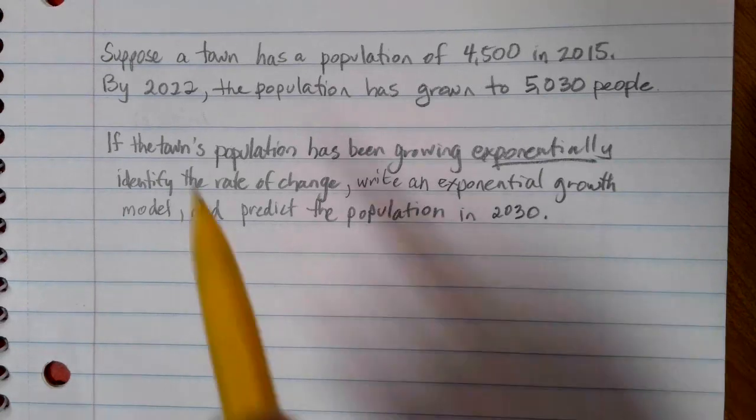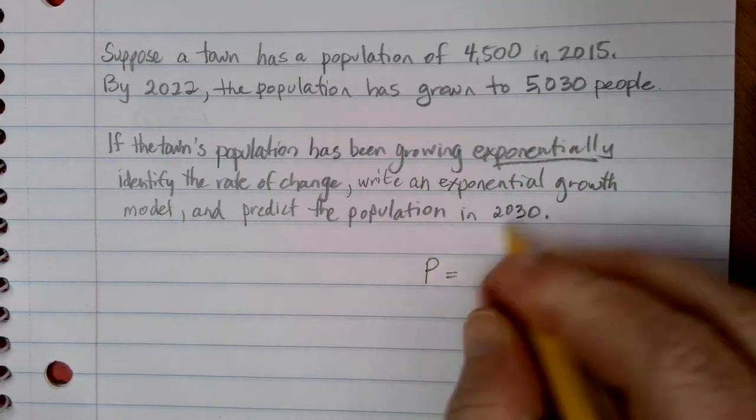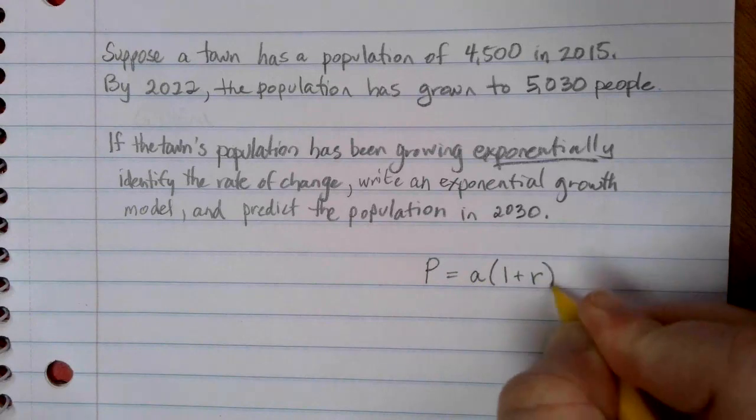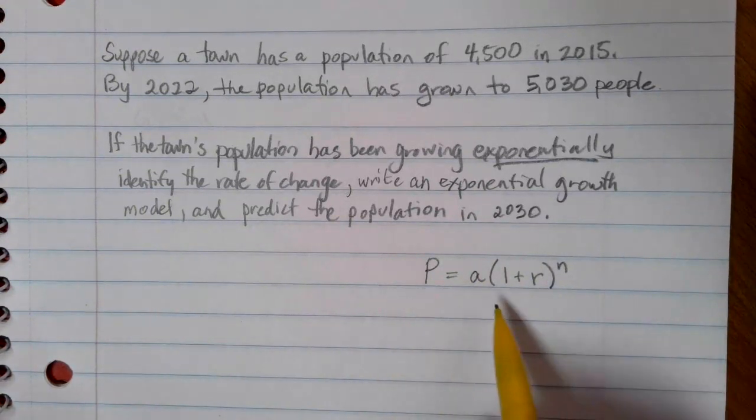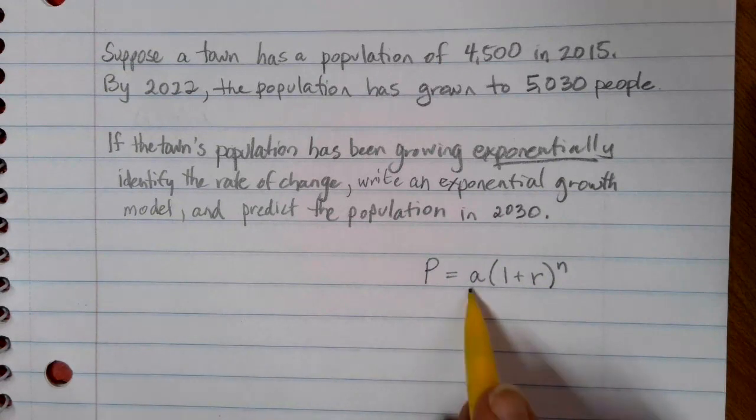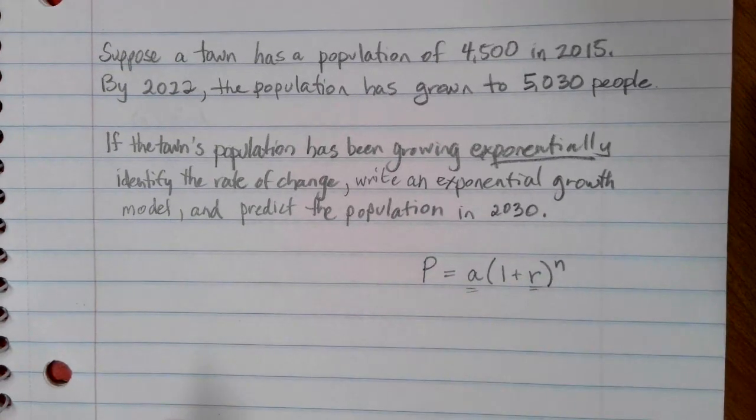In this case, I know an exponential growth model, the general form looks like this: P equals A times 1 plus R to the nth power. So what I want to try to do here is identify the A and the R that's specific so that I can write that exponential growth model.